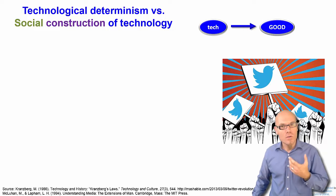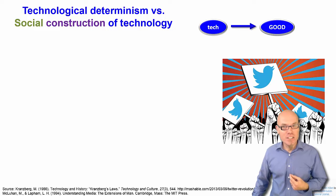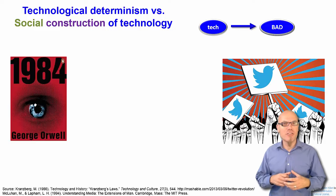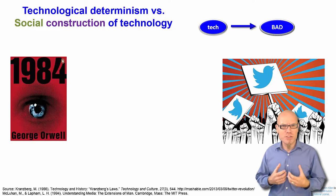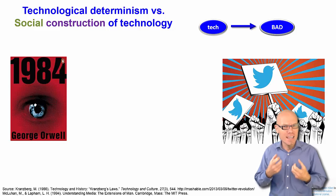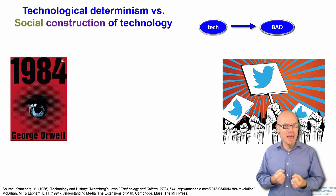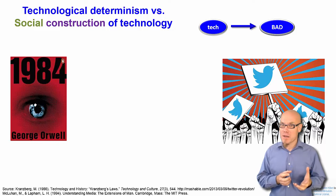What is also technological determinism is if somebody would say the internet implies an informational dictatorship, total control, complete surveillance, the internet is inherently bad. That also means that the technology determines the outcome.